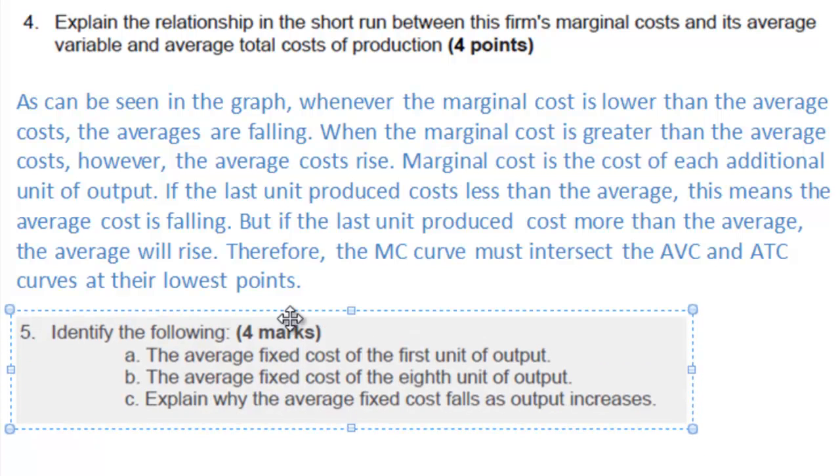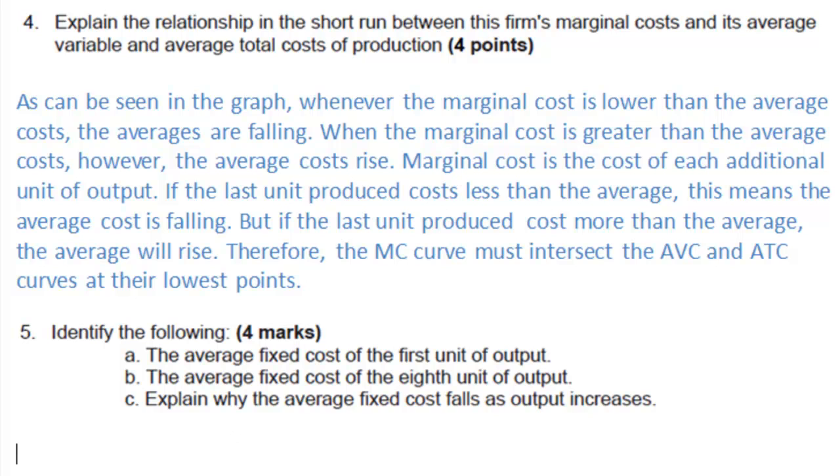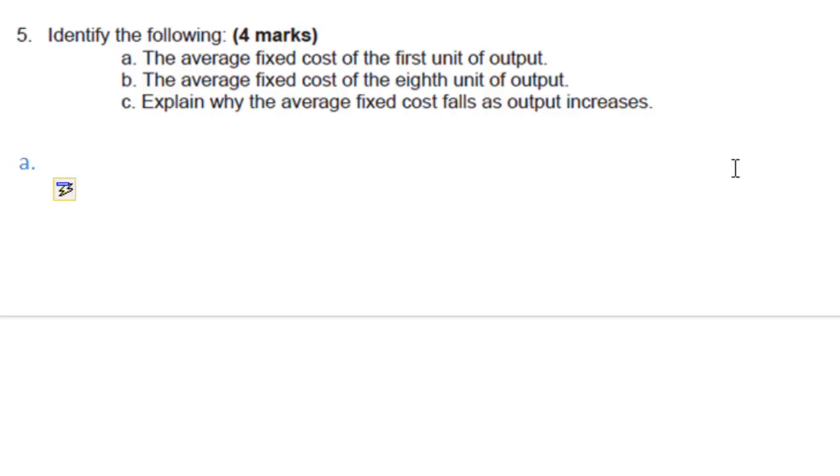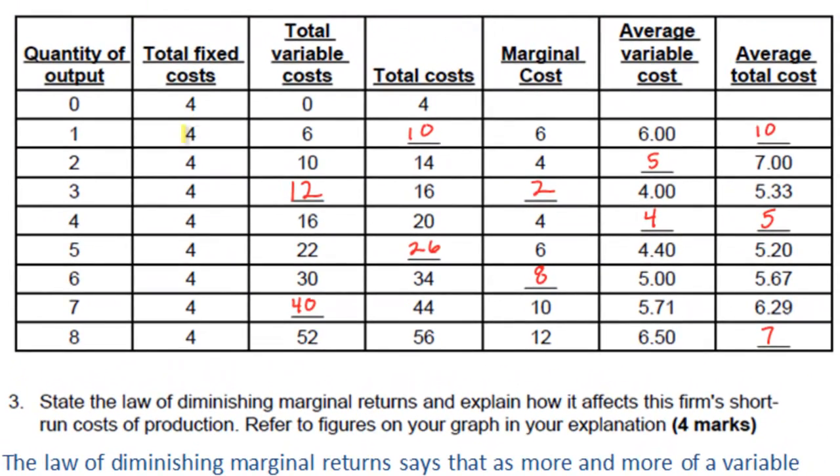Moving on to our final question. This question refers to the average fixed costs. It asks you to calculate the average fixed costs at an output of 1 and at an output of 8. Average fixed cost is simply total fixed cost divided by the quantity of output.